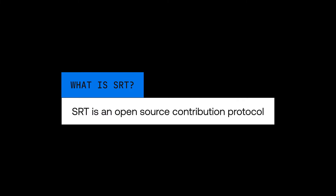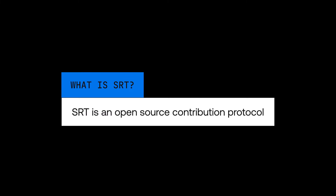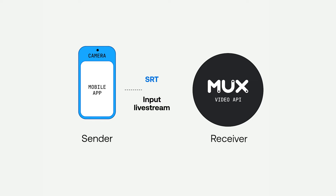SRT is an open source contribution protocol for moving video between two points. It's a protocol designed for reliability and high quality video delivery, even when the network is less than perfect.